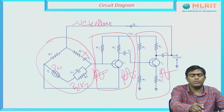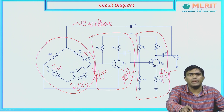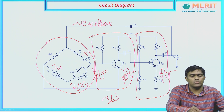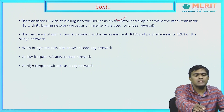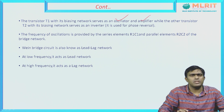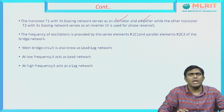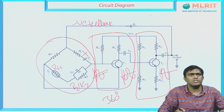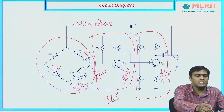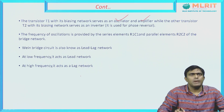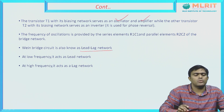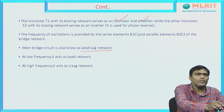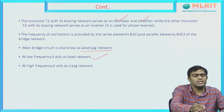The frequency of oscillations is provided by the series element R1, C1 and the parallel element R2, C2 of the bridge network. The Wien bridge circuit is also known as a lead-lag network — at low frequency it acts as a lead network and at high frequency it acts as a lag network.